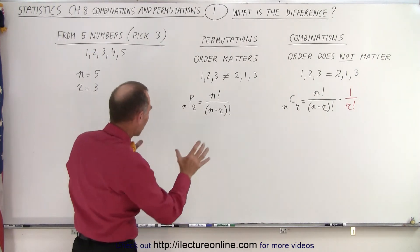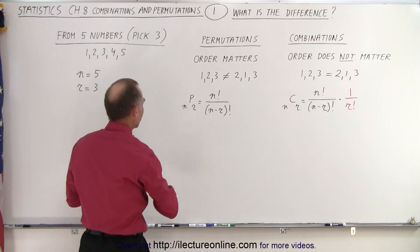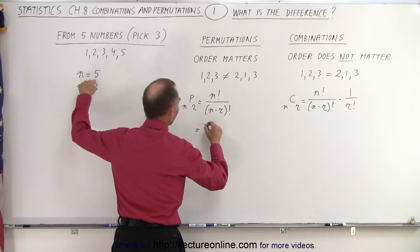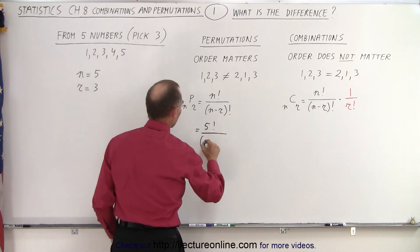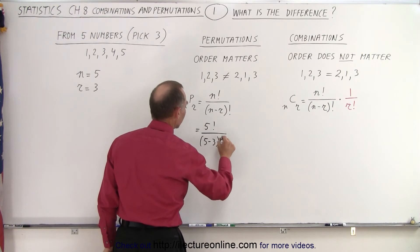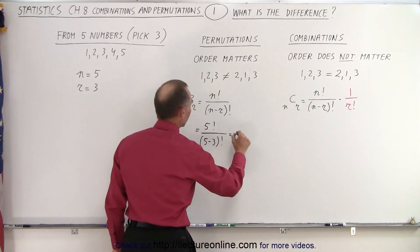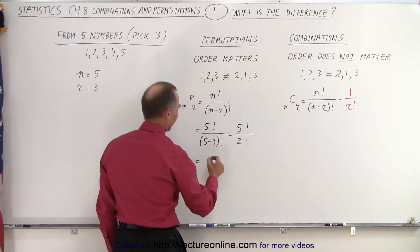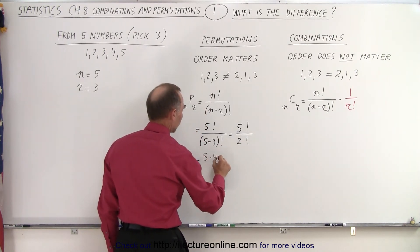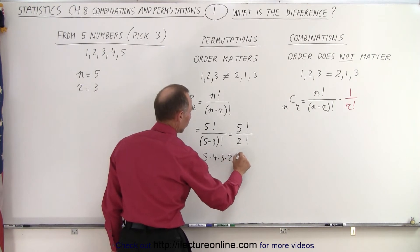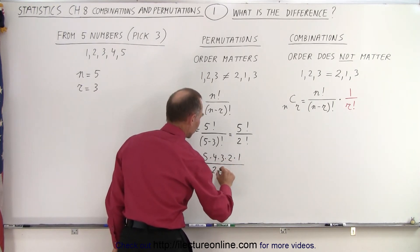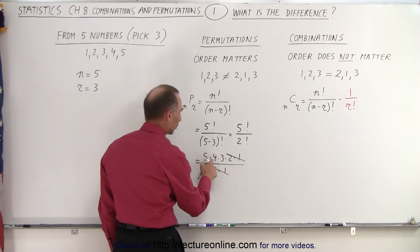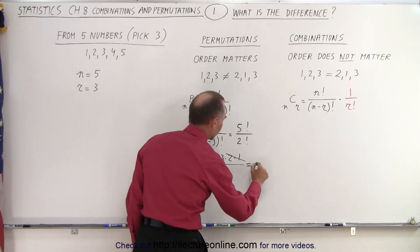So let's calculate what we end up with in this particular example. N factorial — N is 5 — so we end up with 5 factorial divided by (N minus R), which is (5 minus 3) factorial. So this is equal to 5 factorial divided by 2 factorial. And 5 factorial would be 5 times 4 times 3 times 2 times 1, divided by 2 times 1 for 2 factorial. These cancel out, so I end up with 5 times 4, which is 20, times 3, which is equal to 60.